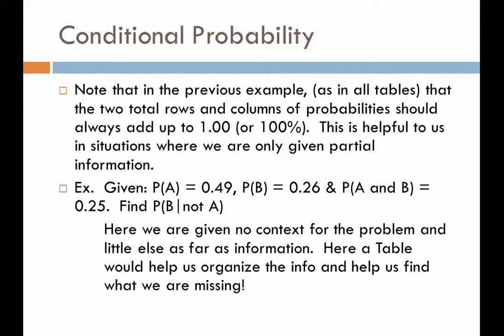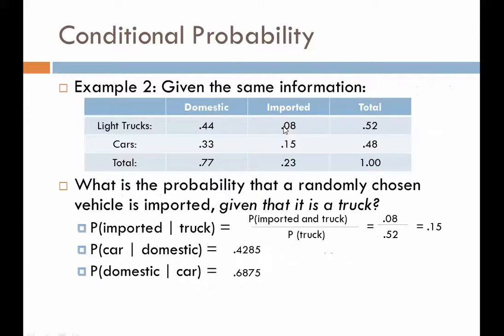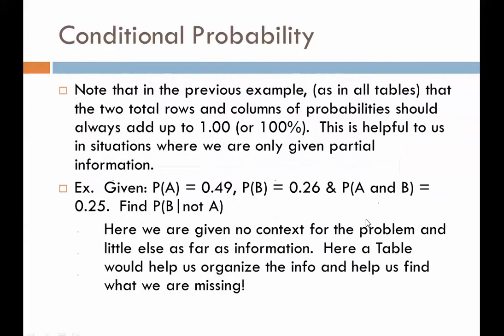Note that in the previous example, as in all tables, the rows and columns of the probability should always add up to 1. Trucks made up 52% of the population and cars made up 48%. Breaking it down by domestics and imports, that row also comes out to 100%. This is important to keep in mind if we're only given partial information and asked to find more complicated probabilities.